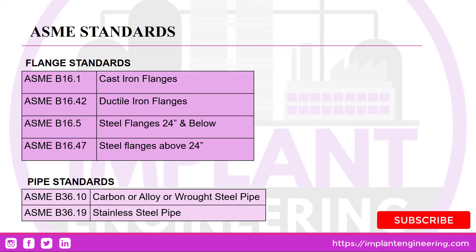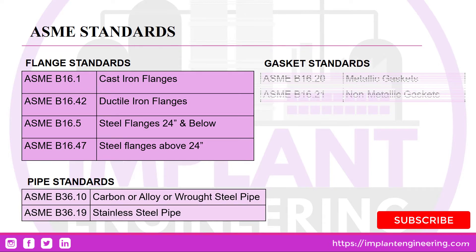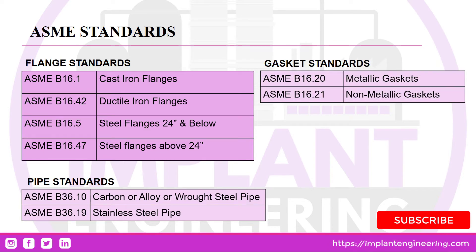The next type of standards are pipe standards. ASME B36.10 is used for carbon, alloy or wrought steel pipes. ASME B36.19 is used for stainless steel pipes. For gasket standards, ASME B16.20 is used for metallic gaskets.